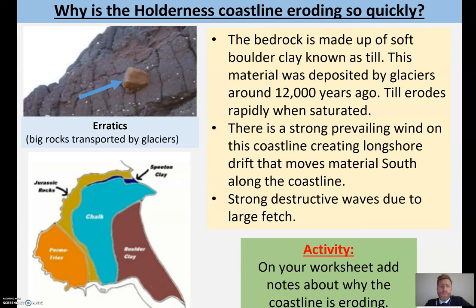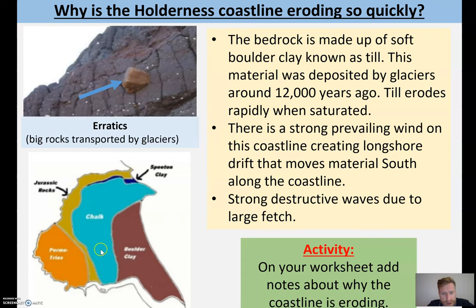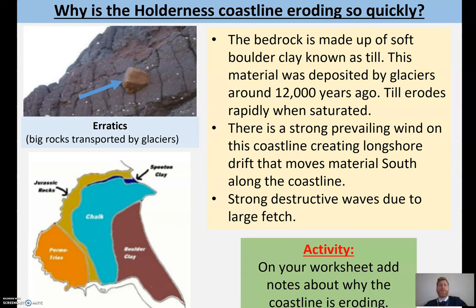So why are they eroding so quickly? The bedrock is made of a very soft boulder clay, known as till. This material I always refer to as new land — it was deposited by glaciers about 12,000 years ago. The glaciers eroded loads of material from the mountains as they passed over the UK and then deposited all this material on the eastern coast. So actually, a lot of these towns are built on borrowed land that wasn't there 12,000 years ago. In my mind, all the sea is doing is eroding the coastline back to where it initially was. The cliffs are very, very soft — you can even rip boulder clay apart with your hands if you were to go up to the cliffs.